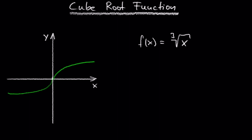What is the third root of 27? The third root of 27 is 3 because 3 cubed is 27.